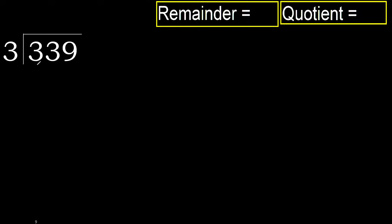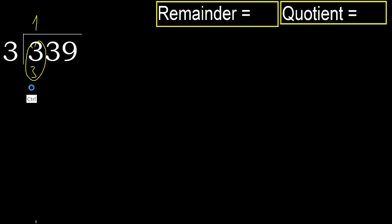339 divided by 3. 3 is not less, therefore start with 3. 3 multiplied by which number is nearest to 3, but not greater? 3 multiplied by 2 is 6 — 6 is greater. 3 multiplied by 1 is 3 — it is not greater. Subtract: 3 minus 3 is 0. Next.